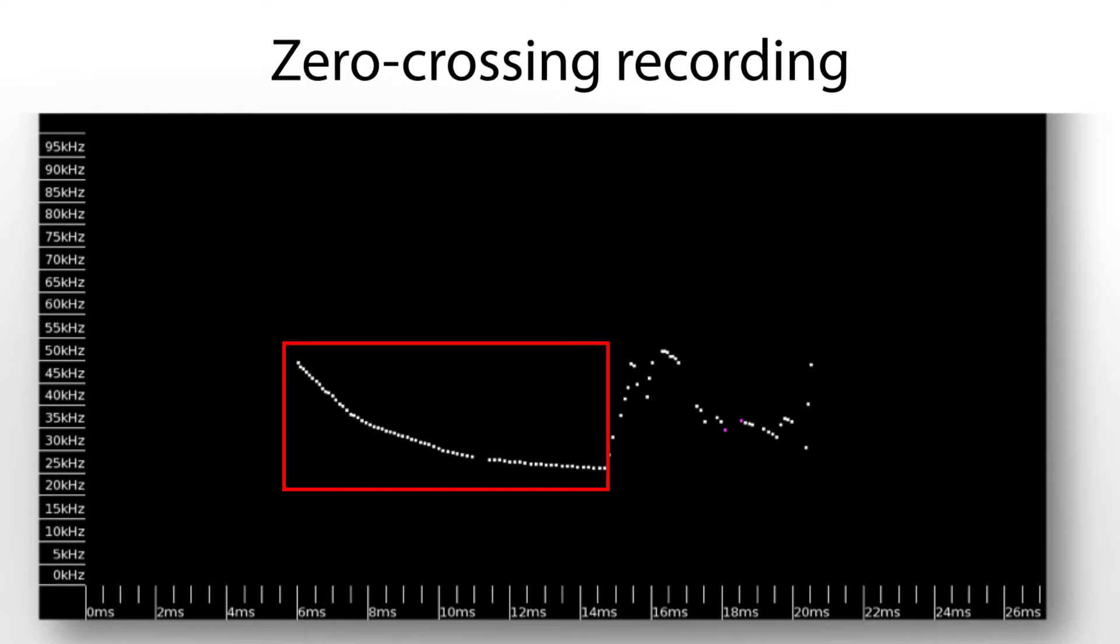You can see the beginning of the zero crossing recording does look like a bat call, but towards the end of the call, the zero crossing dots appear to jump all over the place. What is going on here?